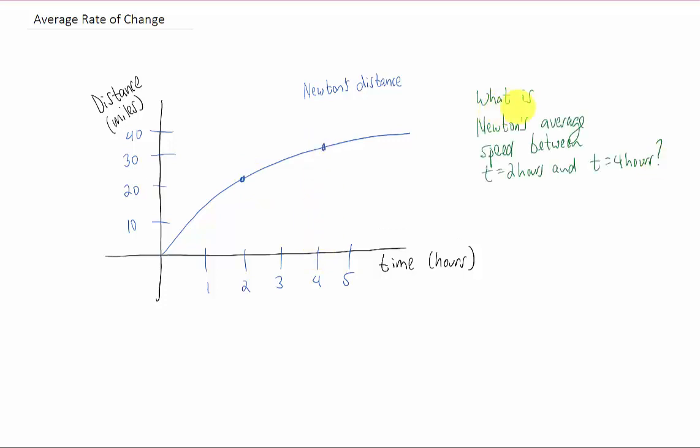And my question is, what is Newton's average speed between his time at two hours and his time clocking in at four hours here? Many of you could probably come up with this answer pretty quickly. His average speed is actually five miles per hour. What you need to do is think about how you got that number.